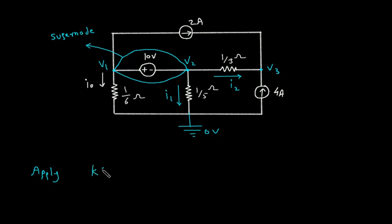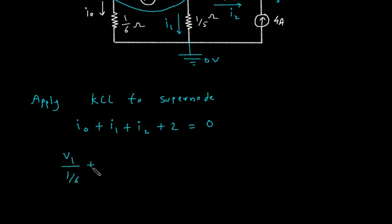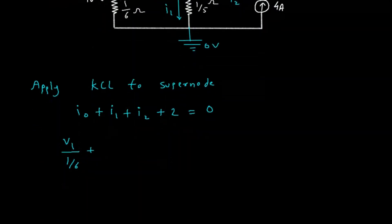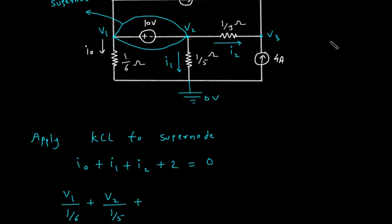Apply KCL to the supernode. The summation of all entering currents equals zero; all currents are leaving. So IO plus I1 plus I2 plus 2 Ampere is equal to 0. Now, IO is V1 minus 0 divided by 1/6, I1 is V2 minus 0 divided by 1/5, and I2 is V2 minus V3 divided by 1/3.